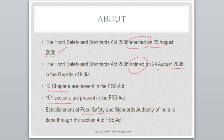The establishment of Food Safety and Standard Authority of India is done through Section 4 of the FSSAI Act. So the institute whose exam you are appearing for was established through Section 4 of the FSSAI Act. To recap: 12 chapters, 101 sections, enacted on 23rd August 2006, and notified on 24th August 2006.